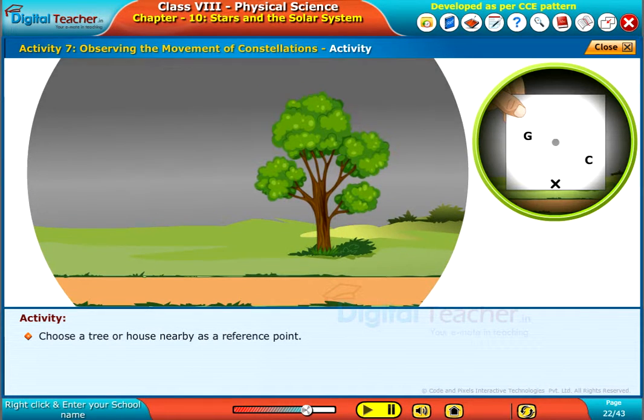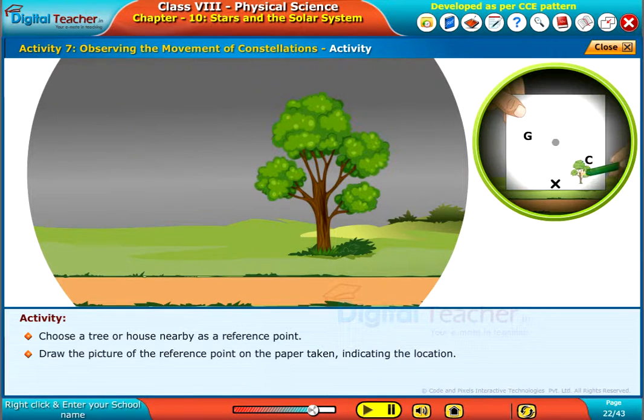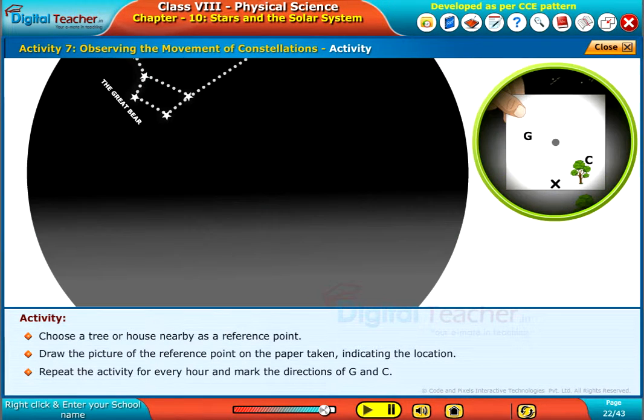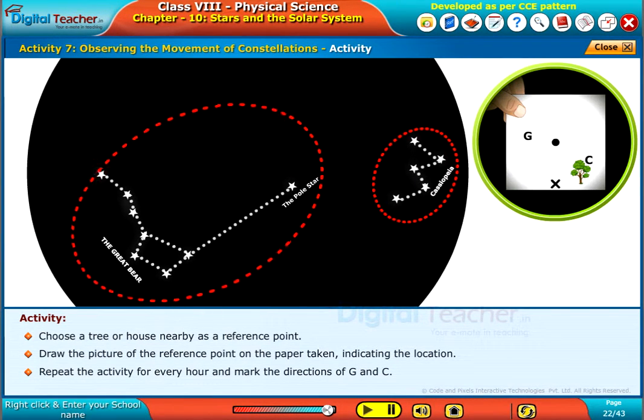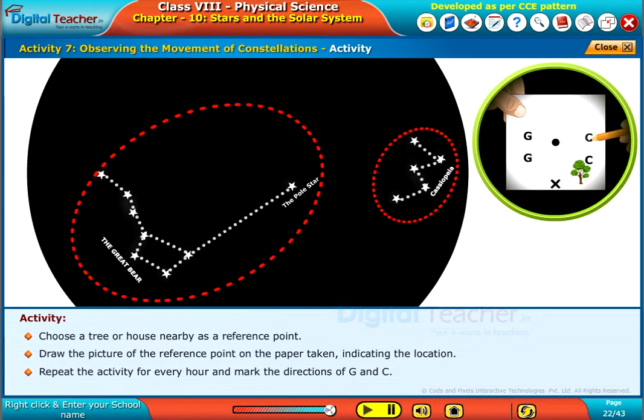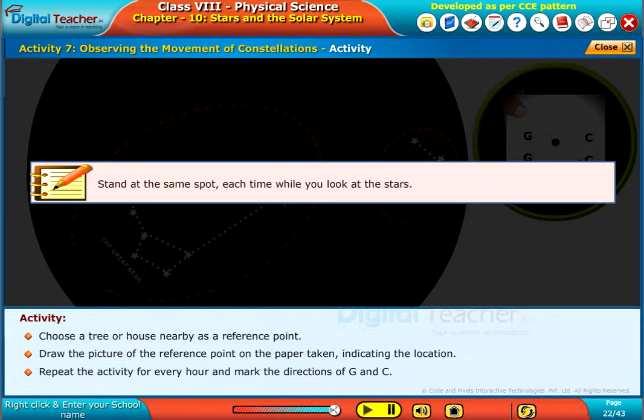Choose a tree or house nearby as a reference point. Draw the picture of the reference point on the paper taken, indicating the location. Repeat the activity for every hour and mark the directions of G and C.